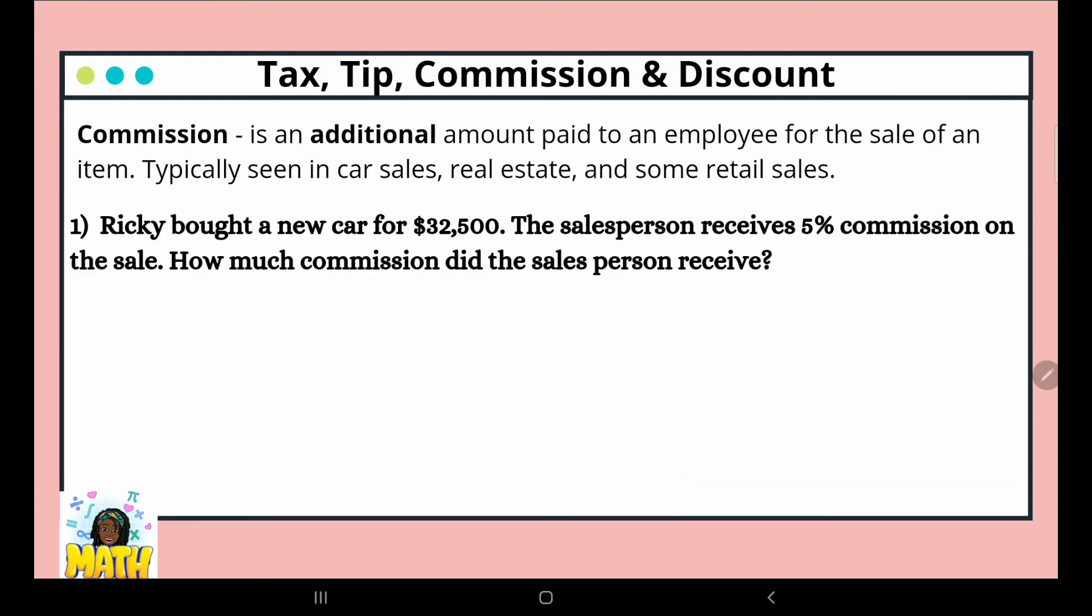Commission is an additional amount paid to an employee for the sale of an item, typically seen in car sales, real estate, and some retail stores. In this example, Ricky bought a new car for $32,500. The salesperson receives 5% commission on the sale. How much commission did the salesperson receive? The original amount is $32,500, the commission is 5%, and we want to know how much commission the salesperson received.